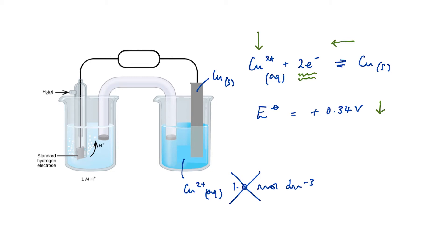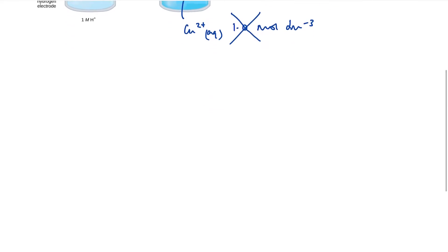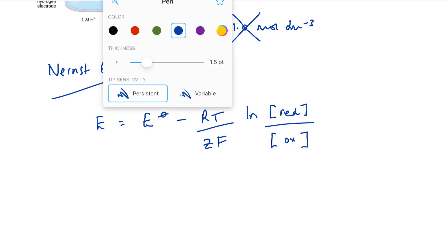The Nernst equation allows us to actually calculate a value for that under these specific conditions rather than it just being a qualitative judgment. The Nernst equation looks like so: E equals E standard minus RT over ZF, LN concentration of the reduced species over the concentration of the oxidized species.